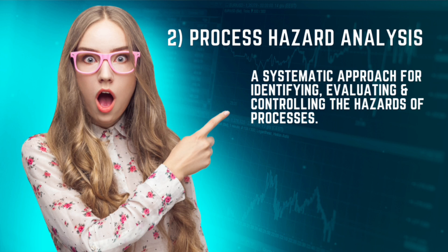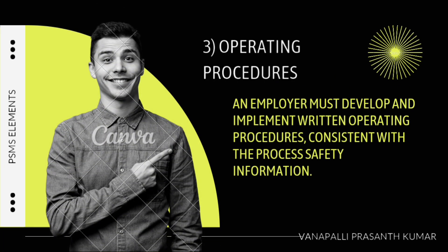The second element is process hazard analysis. What is process hazard analysis? It is about revisiting the process and chemical devices. You will identify and evaluate the hazards. This is a written document for handling the safe operation of the plant.